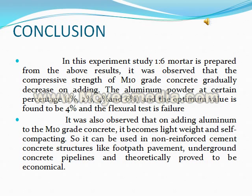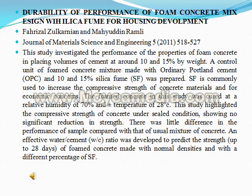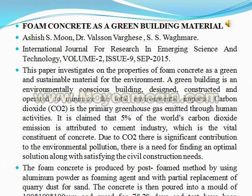Conclusion: It was observed that the compressive strength of M10 grade concrete gradually decreases on adding Aluminium Powder at percentages 1%, 2%, 4%, and 6%. The optimum value was found to be 4% and the flexural test confirmed this. It was observed that adding Aluminium to M10 grade concrete makes it lightweight and self-compacting. So it can be used in non-reinforced cement concrete structures like foot paths, pavements, underground concrete pipelines and the like. Literature Review: Cellular lightweight concrete blocks as a replacement of burnt clay bricks. Durability performance of foam concrete mix designed with silica fume for housing development. Foam concrete as a green building material.